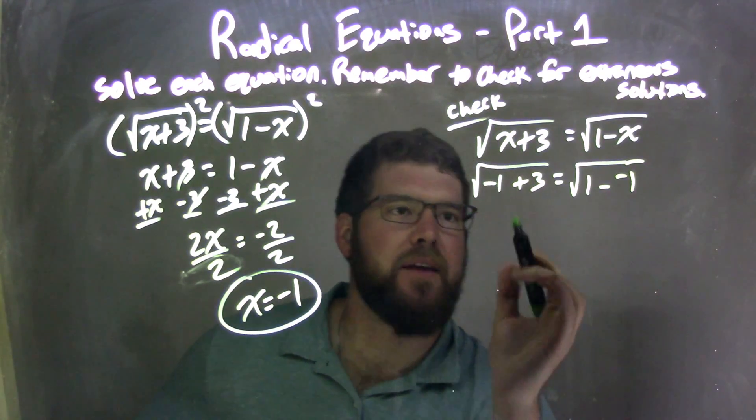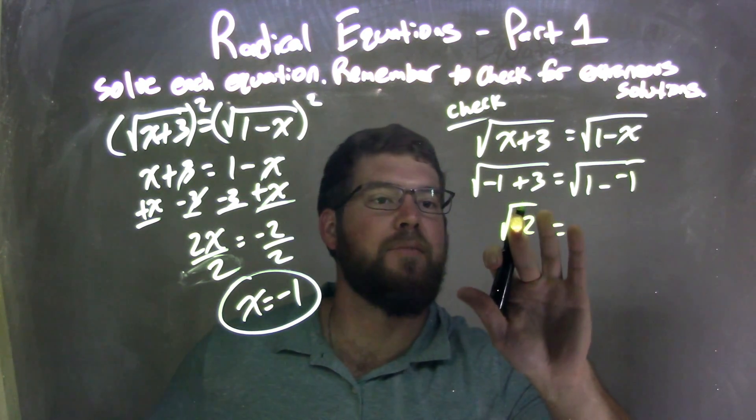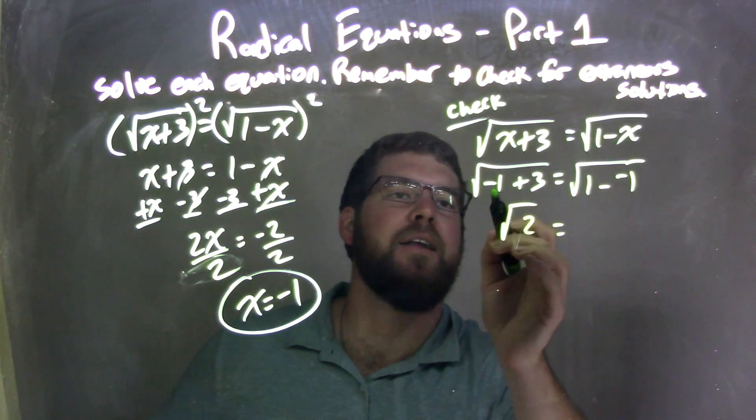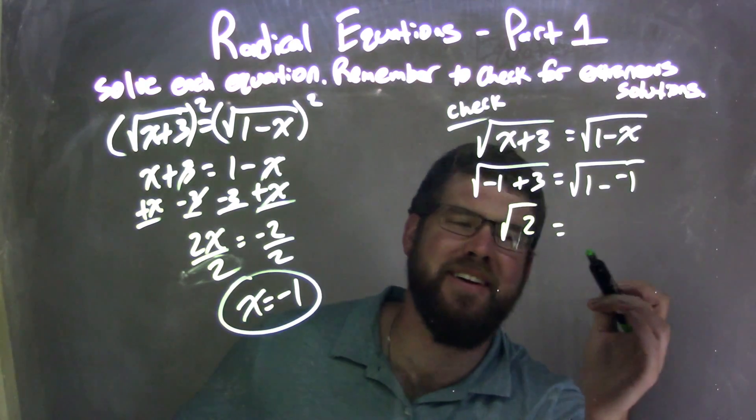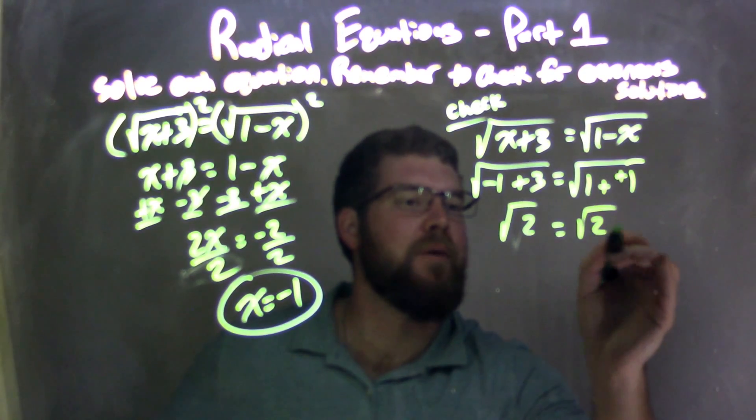Negative 1 plus 3 is positive 2. And then 1 minus a negative 1 is 1 plus a positive 1, right? And it's a square root of 2 there.